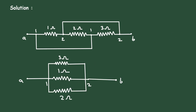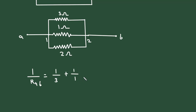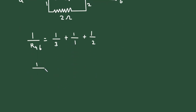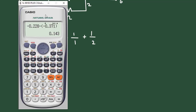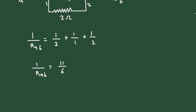Now with the simplified circuit, RAB is found using the parallel formula: 1 upon RAB equals 1/3 plus 1/1 plus 1/2. Solving this, 1/RAB equals 1/3 plus 1 plus 1/2, which gives 11/6. Now we take the reciprocal to find RAB, so RAB equals 6/11.